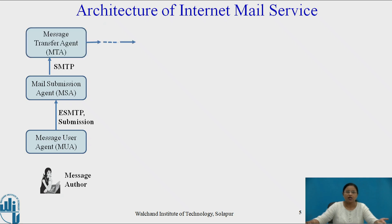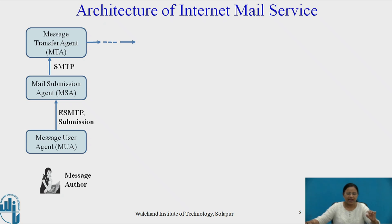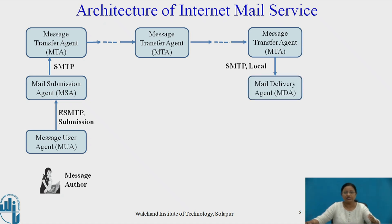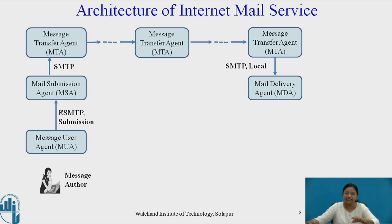The message submission agent submits the message to the message transfer agent. The message transfer agent relays mail for one application-level hop. It is like a packet switch or IP router in that its job is to make routing assessments and to move the message closer to the recipient. Multiple message transfer agents are used, which route the message through the network and send the message nearer to the destination. This relaying is performed by a sequence of MTAs until the message reaches the destination mail delivery agent, called the MDA.